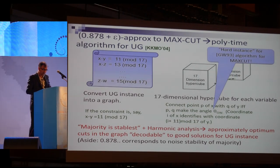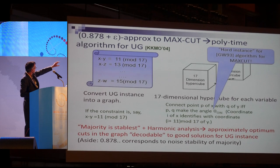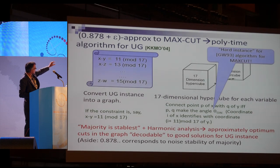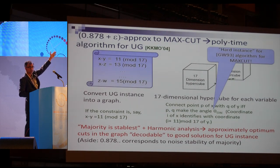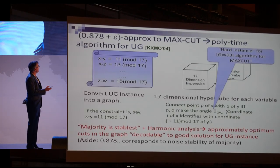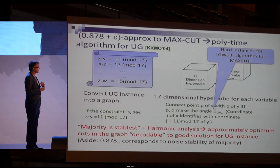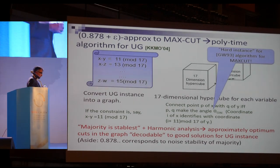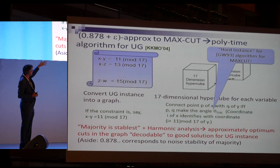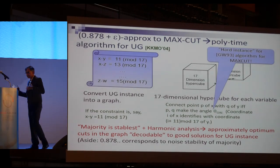If you had a good algorithm for max cut, you could find approximately optimal cuts and convert those to a good solution for the unique games instance. This is the general methodology in all these results, and it started with Khot's 2002 paper, where he formulated this hypothesis and methodology, since followed by a flurry of work including by Khot himself.